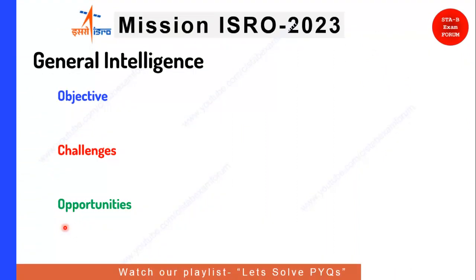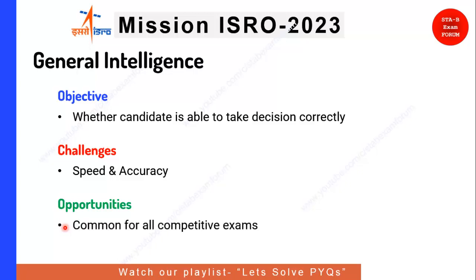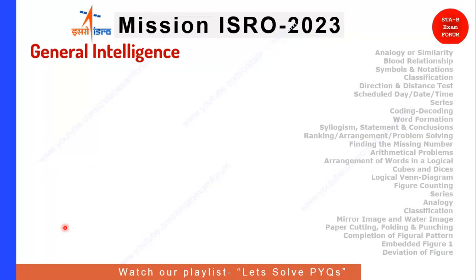Let's see the next section — General Intelligence. The objective of this section is whether the candidate is able to take decisions correctly. The challenge is again speed and accuracy, as General Intelligence questions are generally lengthy. Questions on topics like sitting arrangement can eat a lot of your time, so you need to manage time in the General Intelligence section. As with the other sections, it is common for all competitive examinations.